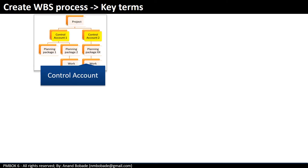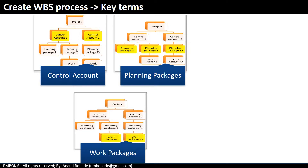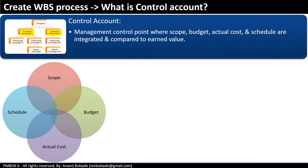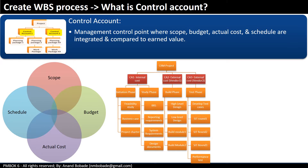Let's take a look at some key terms used in the Create WBS process: control account, planning package, and work package. Control account is a management control point where scope, budget, actual cost and schedule are integrated and compared to earned value. For example, in a CRM project, management might mandate monitoring the cost of internal resources and various vendors separately through respective control accounts. There are three control accounts: control account 1 for internal resources, control account 2 for vendor 1, and control account 3 for vendor 2. These can be analyzed separately in terms of planned scope, schedule, approved budget, actual cost, and earned value.